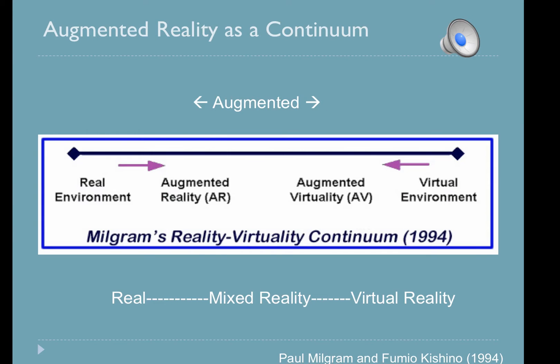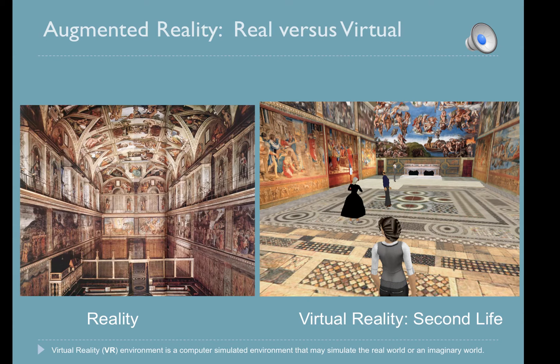Another definition by Milgram sees augmented reality as a continuum. On one side we have reality, and on the other, virtual reality. In between, what we have is mixed reality or augmented realities. On the left is the real-world Sistine Chapel; on the right, we see Second Life's virtual reality version of the chapel.